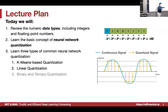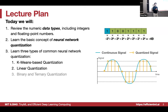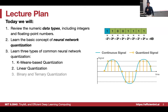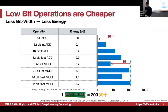Quantization basically turns a continuous signal into a discrete signal. The signal used to be continuous — you could get any value from minimum to maximum — but now we give only a few choices: one, two, three, four, five — only five choices. The value must be one of these discrete values.